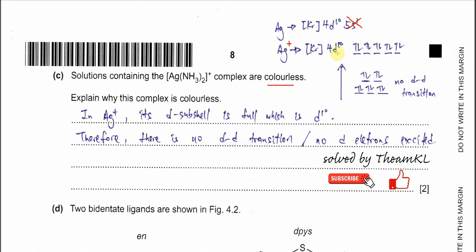When it's 4d¹⁰, all the d orbitals are fully filled. If there is d-d splitting forming two sets of d orbitals, even if light passes through the solution, there is no d-d transition. The electrons from the lower d orbitals cannot excite to the higher energy d orbital. So we say no d-d transition. Because no d-d transition, there's no absorption of light, therefore it's colorless.